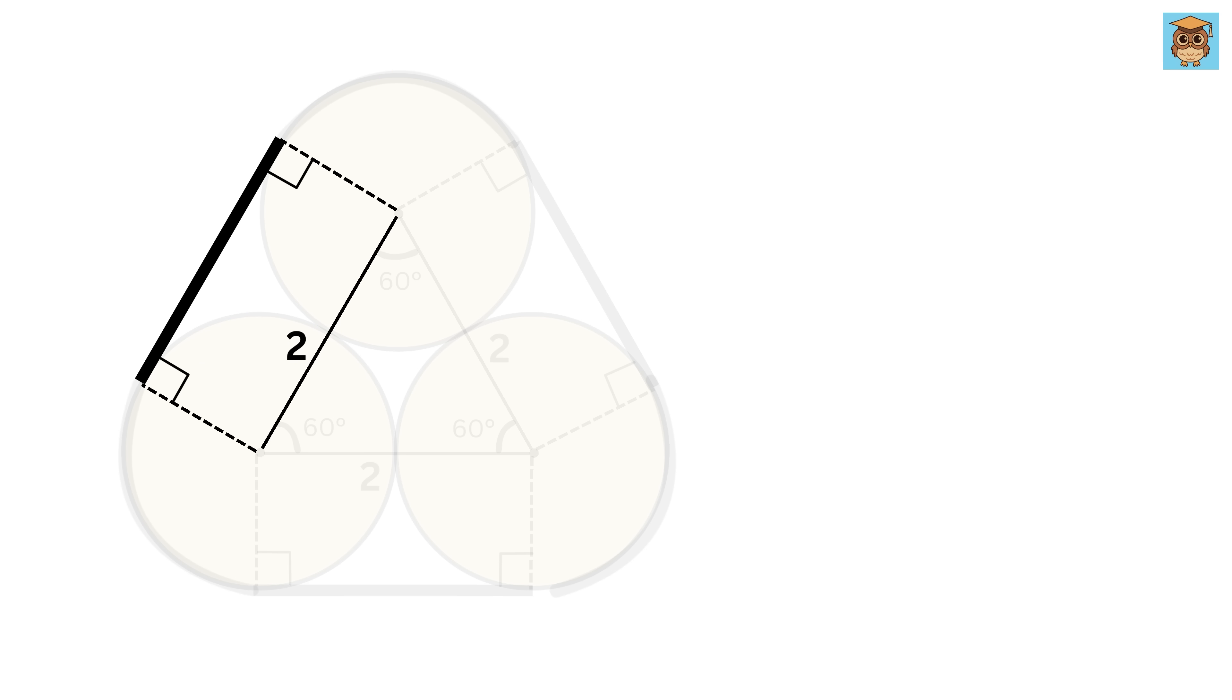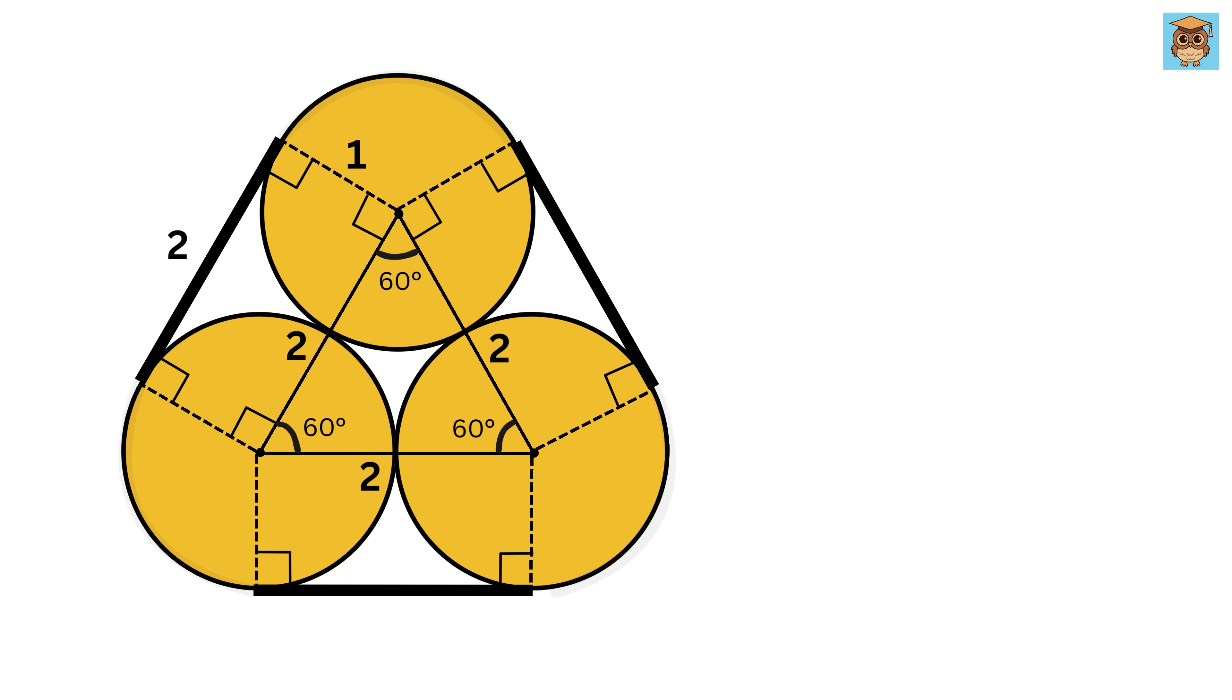Now since both of them are 90 degrees and both these sides are of equal length, which is the same as the radii of these circles or one unit, therefore this quadrilateral will be a rectangle. And thus this piece will be equal to this, or two units.